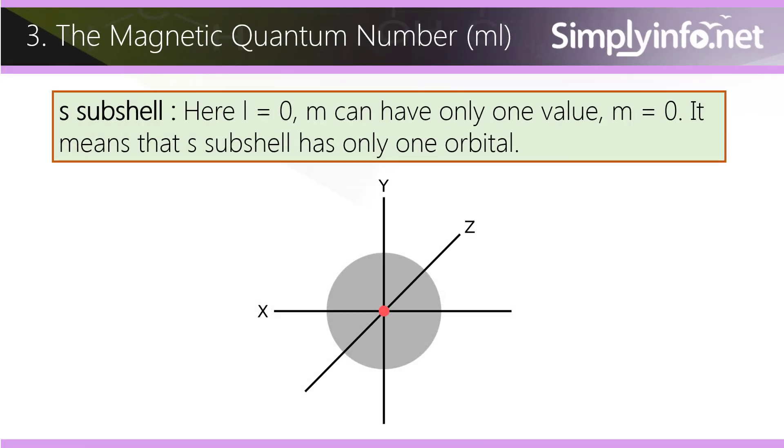s subshell: Here l equals 0. m can have only one value, m equals 0. This means that the s subshell has only one orbital.